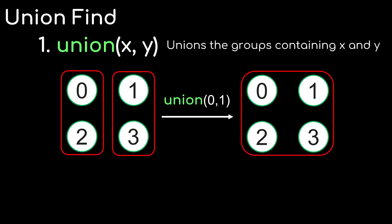The union-find data structure, as its name suggests, supports two operations. The first one is called union, which takes as input two elements, x and y, from the set of objects and it joins or unions the groups containing x and y.